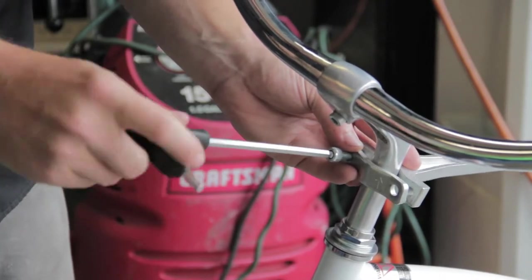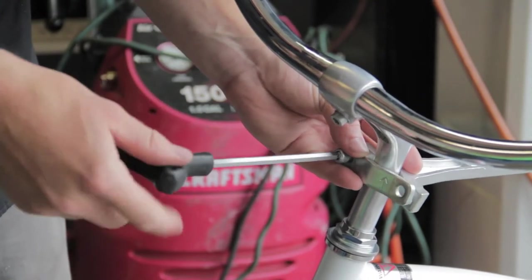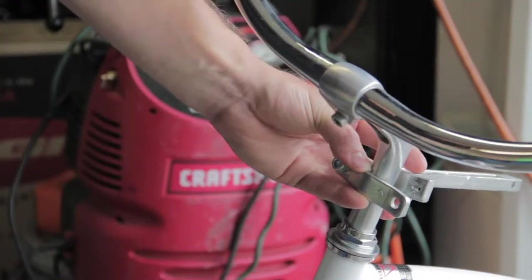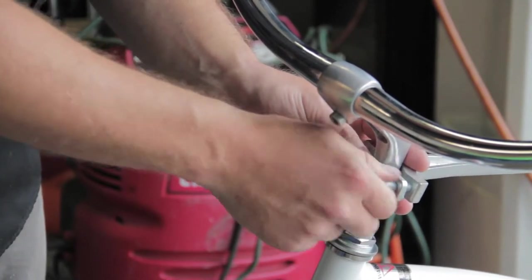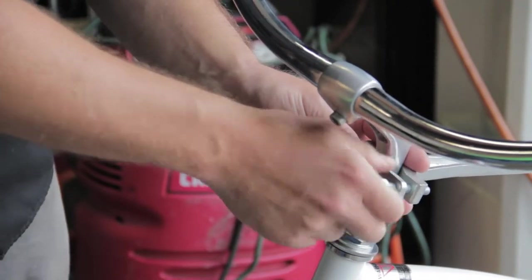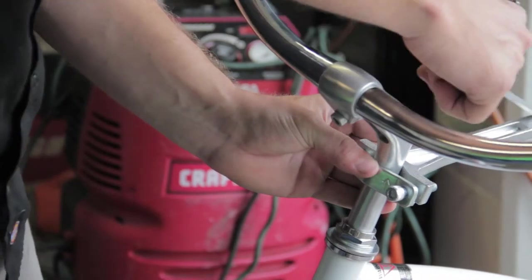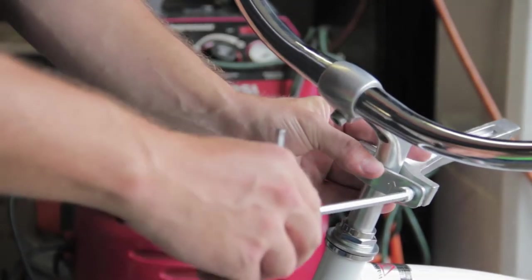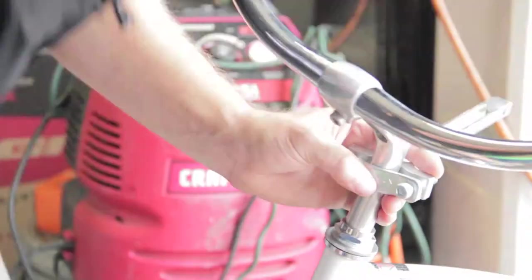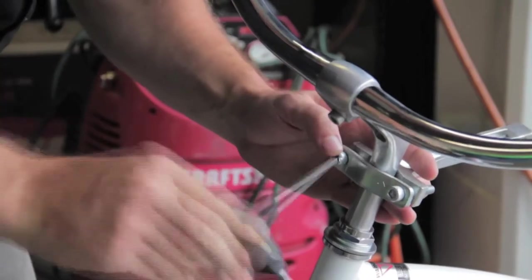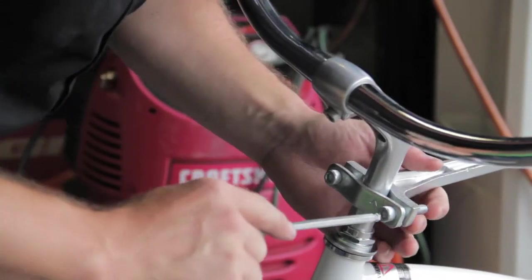Then tighten the Allen head screw. Insert the other Allen head screw, tighten that. And you want to make sure that this mounting bracket is in line with the stem and the wheel. Once the screws start to get tighter. So everything's lined up. Then we're going to really tighten these down.